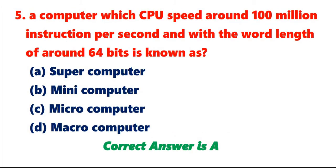Question 5: A computer which CPU speed around 100 million instructions per second and with the word length of around 64 bits is known as A. Super computer. B. Mini computer. C. Micro computer. D. Macro computer. Correct answer is A.